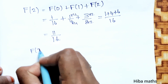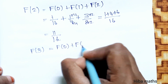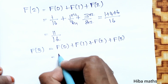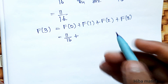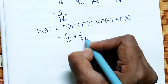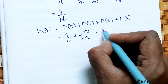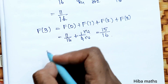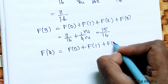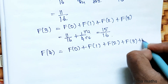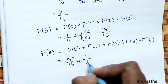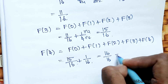F(3) = F(2) + P(X = 3) = 11/16 + 1/4 = 11/16 + 4/16 = 15/16. F(4) = F(3) + P(X = 4) = 15/16 + 1/16 = 16/16 = 1. This confirms the CDF is correct.